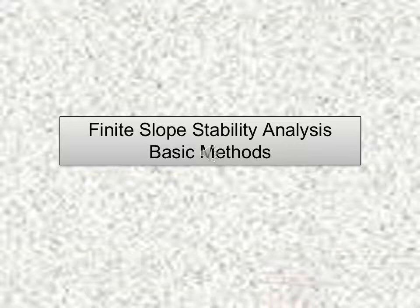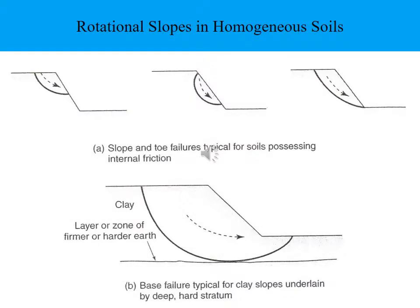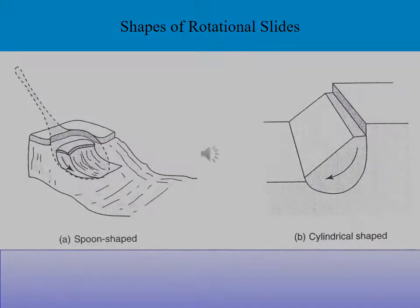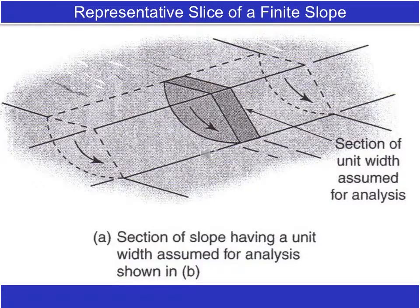Finite slope stability analysis and basic methods. Rotational failures occur in homogeneous soils and are shown in the figures — actual rotational failure produces a spoon-shaped or cylindrical-shaped failure surface. A representative unit-width slice of a finite slope is taken for analysis, and we analyze it to determine the factor of safety.